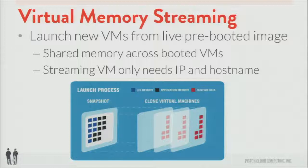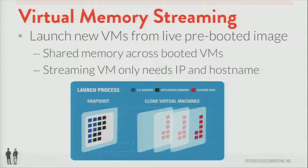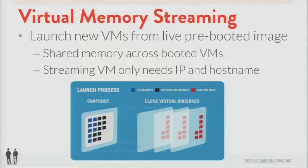When we boot from that blessed image or live image, that memory is actually shared across all the VMs you've created. So you've done some deduplication and you're able to approximately double the number of virtual machines you get on each host. The image is pre-booted, it streams, and you basically just have to add an IP address and a hostname and your images are up and running. It's a very quick process, and for those doing VDI who need a lot of desktops to come up very quickly, this is a great solution.